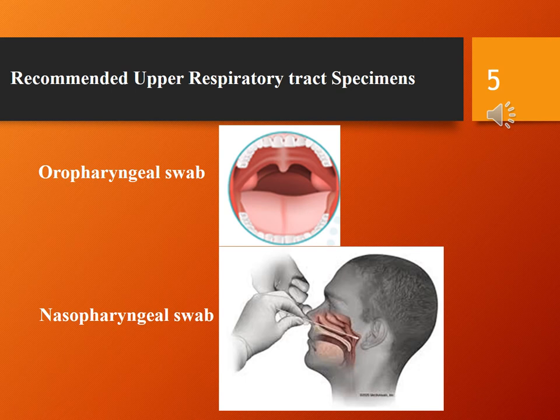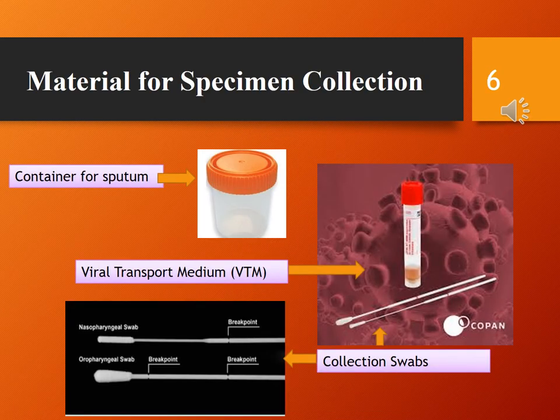The most commonly collected upper respiratory tract specimens are oropharyngeal and nasopharyngeal swabs. It is recommended to collect both oropharyngeal and nasopharyngeal swabs in the same container with viral or universal transport medium.